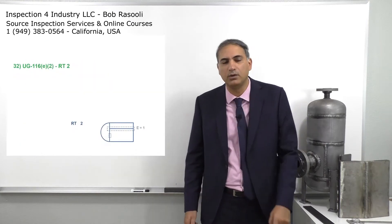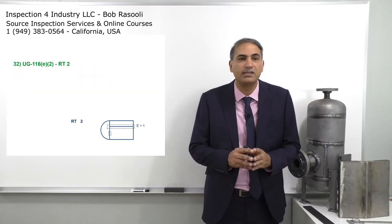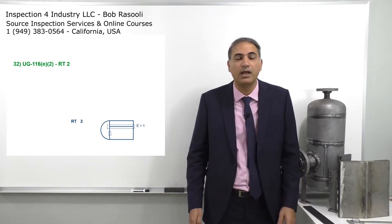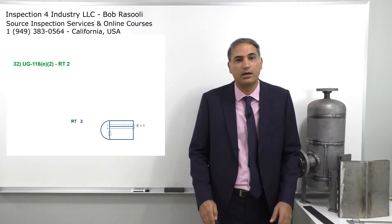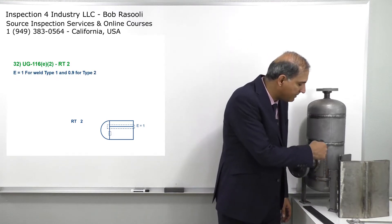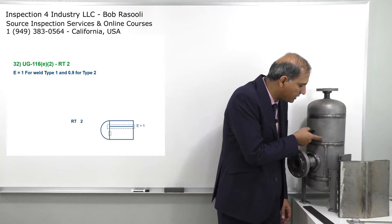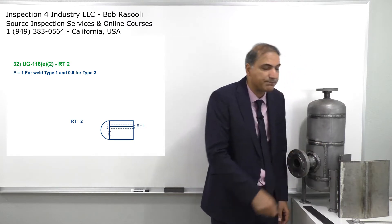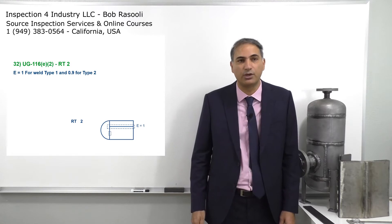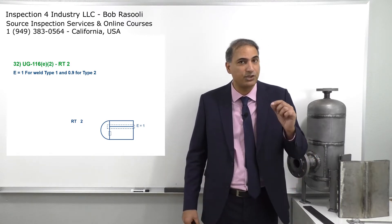Let's see what RT2 is. RT2 is indicated on UG-116E2, and as you can see on screen, you have to make the full radiography on the long seam and do partial or spot radiography on the circumferential joint. You can then use the same joint efficiency values.